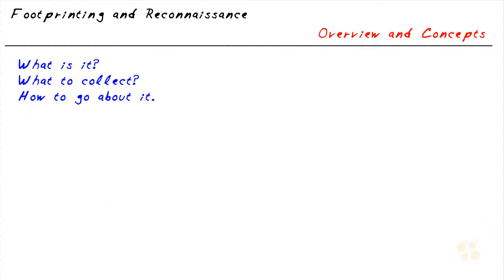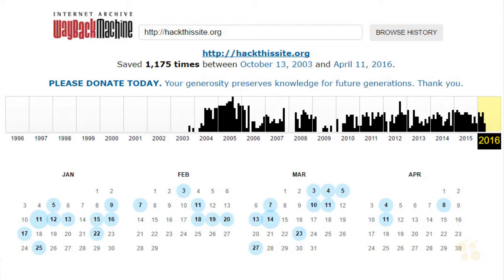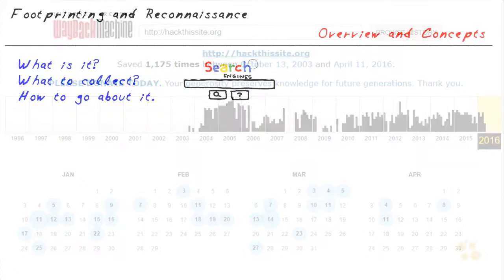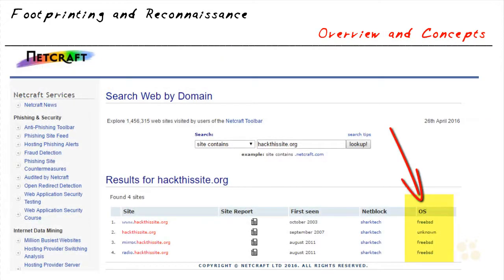Search engines are a fantastic way to do footprinting and reconnaissance because using a search engine is passive — we're not directly interacting with the target. We can learn things like technology platforms, employee details, login pages, and internet portals. There are also amazing archives: if a web page had details 12 months ago and the site has since changed, caching means we can use cache engines to retrieve that older content. There are also web-based services that can tell us the operating system of a company's servers without us ever directly contacting those servers.